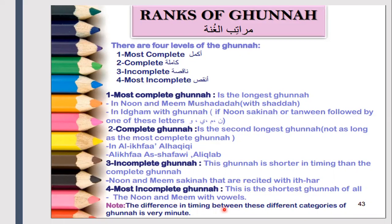The incomplete Ghunnah is shorter in timing than the first two categories. It is applied to noon and meem sakin in idh-haar, meaning the letters are said clearly with no humming — we only make Ghunnah on the first two categories. The last category is the mutaharrik, which has a very short Ghunnah, and in the final category it is not apparent at all, making it the most incomplete Ghunnah.